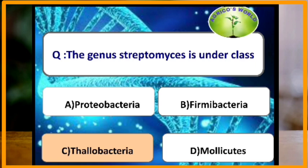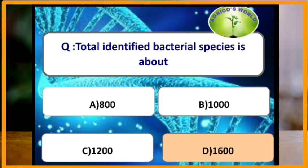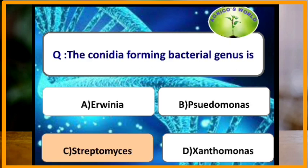The genus Streptomyces is under the class Thallobacteria. Phytoplasmas are under the kingdom Prokaryotae. The total number of identified bacterial species is approximately 1600.